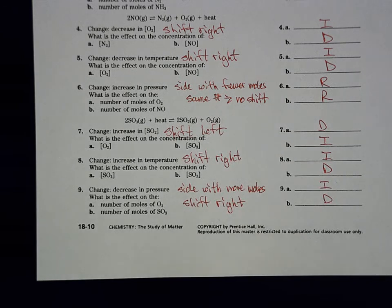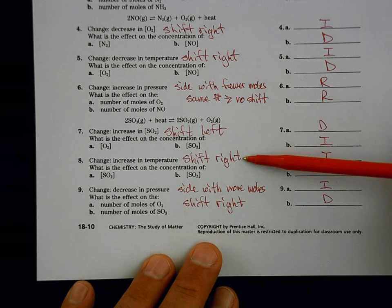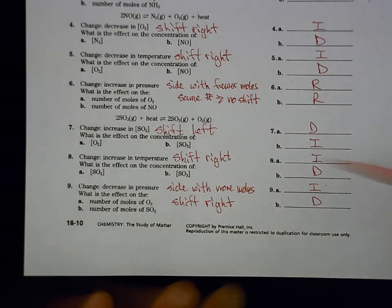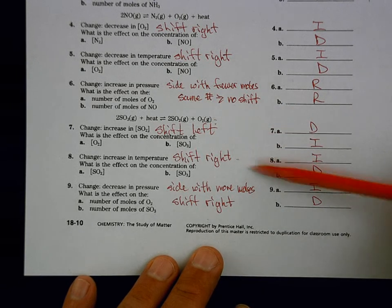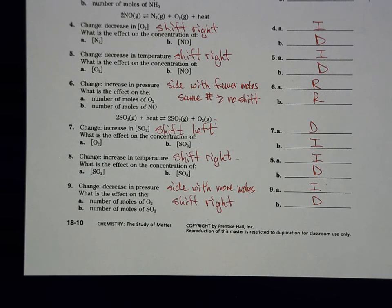To summarize: anytime we see an increase we want to go away from it, and anytime we see a decrease we want to go toward that side. Always start by asking: do I want to shift right or shift left? Once you know that, shift right means make more of what's on the right and less of what's on the left; shift left means make more of what's on the left and less of what's on the right.